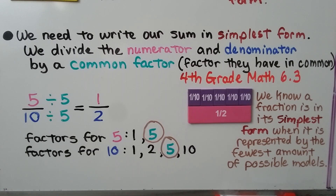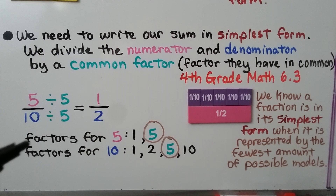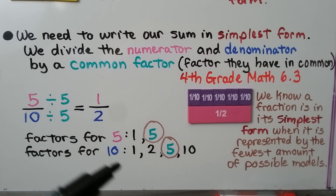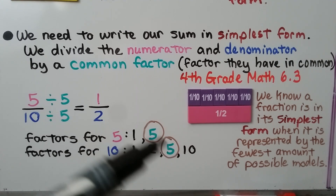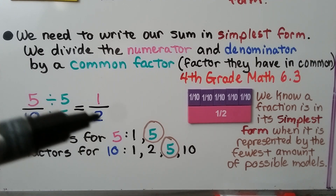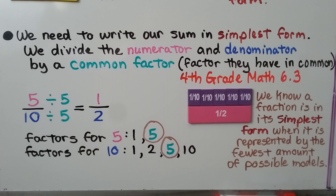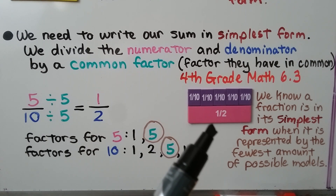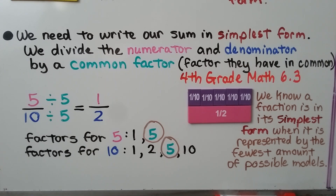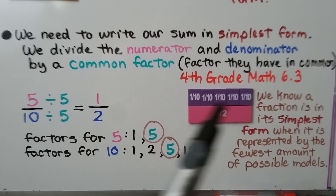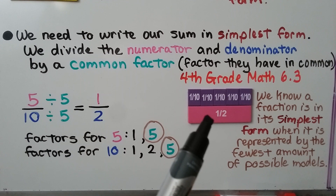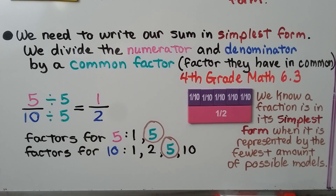We need to write our sum in simplest form. We divide the numerator and denominator by a common factor — a factor they have in common. The factors for 5 are 1 and 5, and the factors for 10 are 1, 2, 5, and 10. They have 5 in common. 5 divided by 5 is 1; 10 divided by 5 is 2. It's equal to 1 half in simplest form. We know a fraction is in its simplest form when it is represented by the fewest amount of possible models. So 5 tenths is equal to 1 half — that's the fewest amount: one piece that's 1 half.